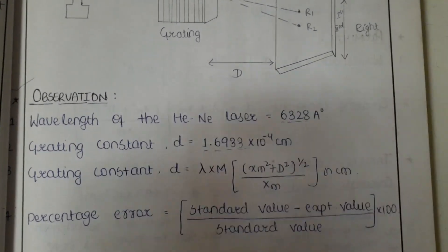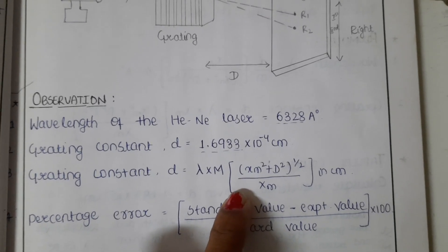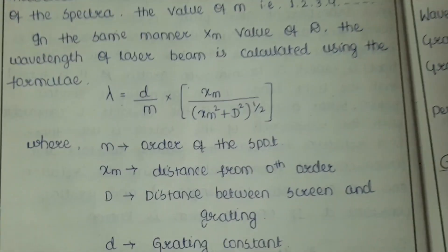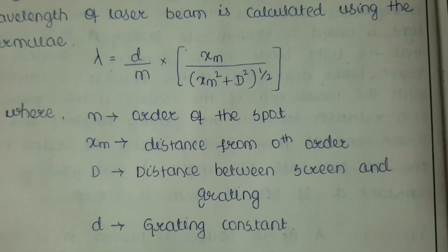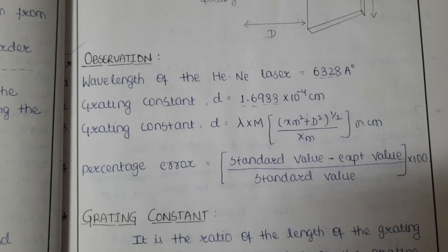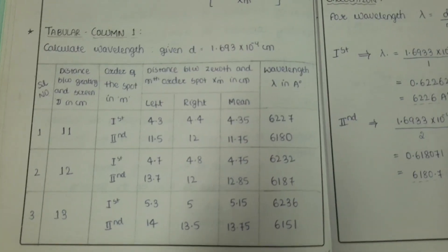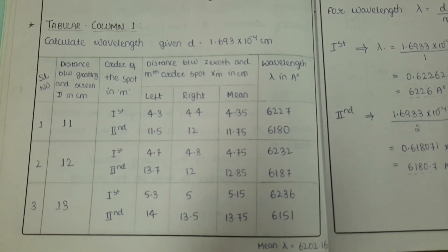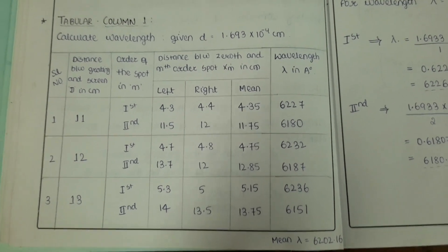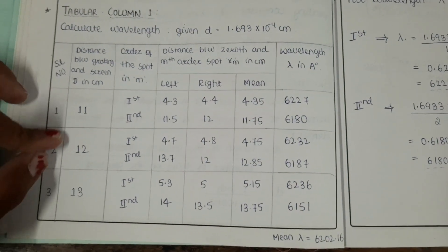Write down the formula to calculate the grating constant and the wavelength calculation formula. The percentage error can be calculated using the given formula. This is the tabular column to calculate the wavelength of laser light — first note the distance between the screen and grating.